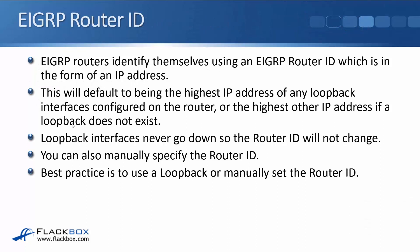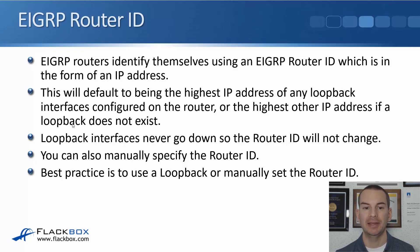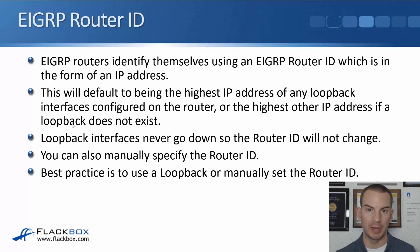The last thing to cover is the router ID. EIGRP routers identify themselves to other EIGRP routers using a router ID in the form of an IPv4 address. The router ID defaults to the highest IP address of any loopback interfaces configured on the router, or if there are no loopbacks, the highest IP address on a physical interface. You want the router ID to be stable because this is how the router identifies itself to other EIGRP routers.